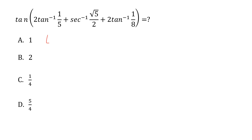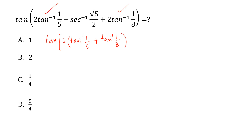We can write the question as: tangent of 2 times tangent inverse of 1 over 5, plus tangent inverse of 1 by 8, plus secant inverse of square root of 5 divided by 2.